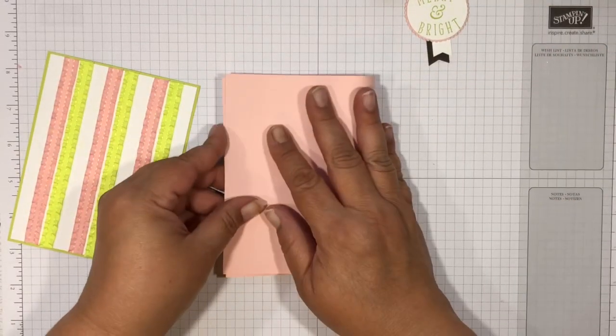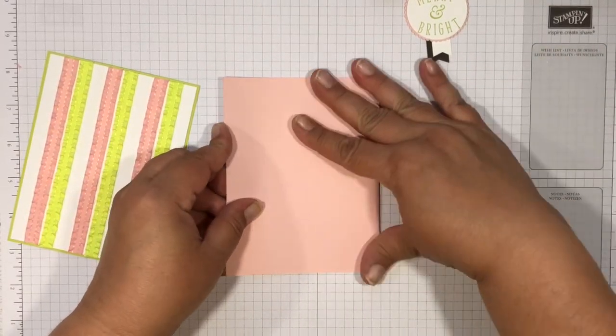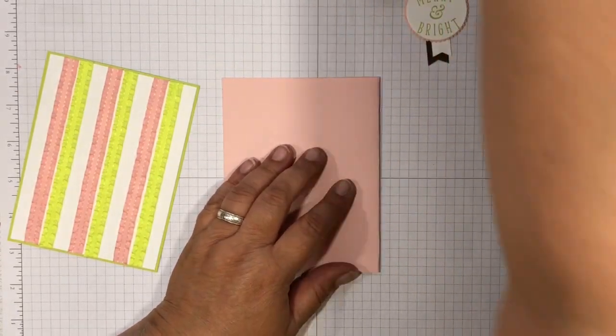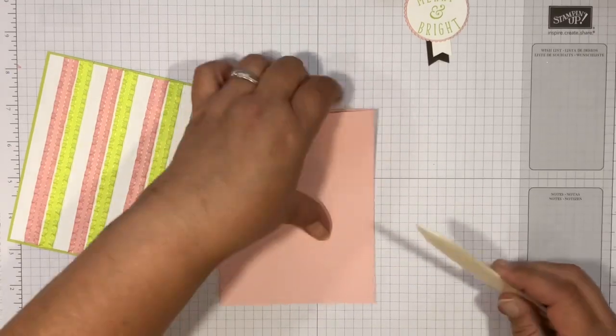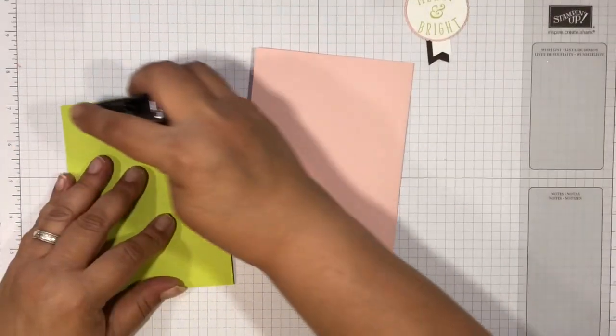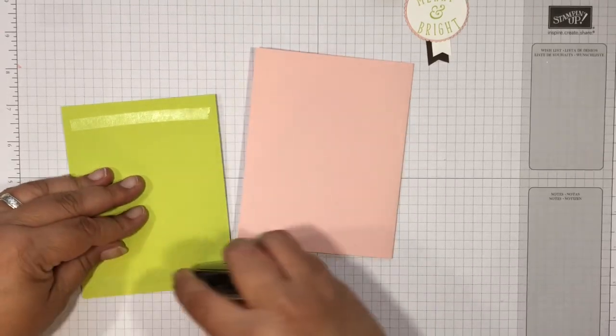We're going to mat it on here and then we're going to take our card base. We're going to fold this in half or you can score it at four and a quarter and burnish this to make sure it lays flat. Then we're gonna add some adhesive to this one and put it on here.